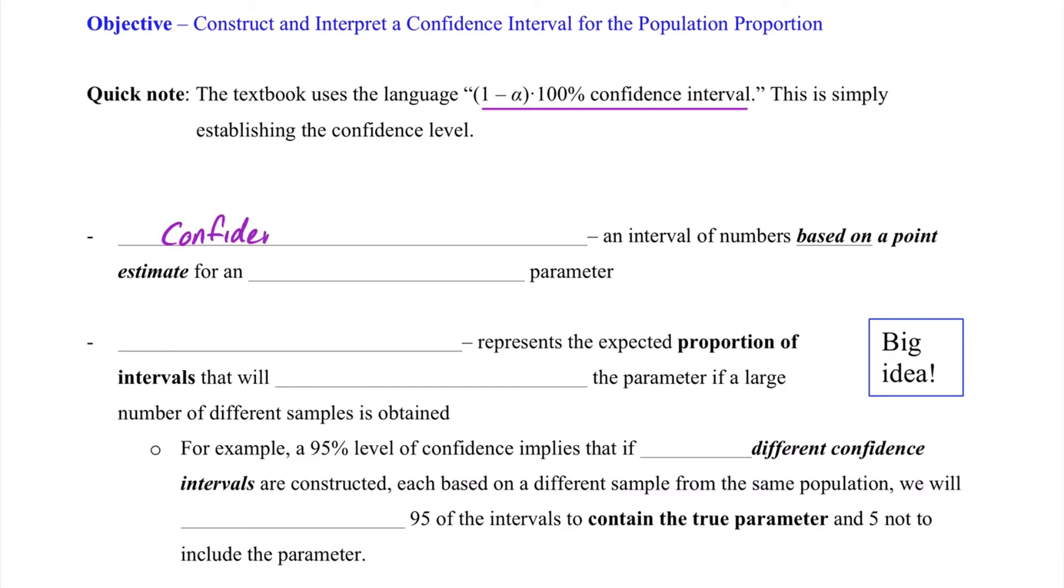First, a confidence interval is an interval of numbers based on a point estimate for an unknown parameter. This is a big deal because we no longer know the parameter. A lot of the examples we've been working with, they tell us the parameter. But this is getting closer to real-life stats. We don't know the parameter. And instead, we're going to use sample information in order to build this confidence interval.